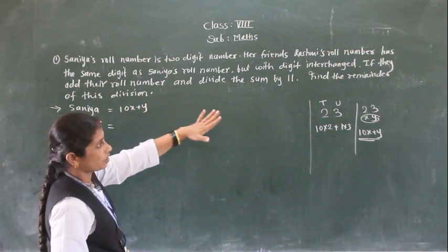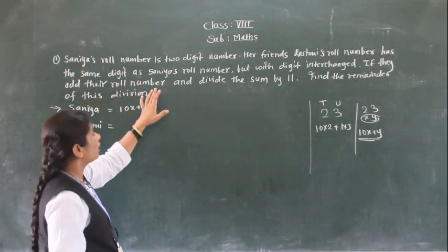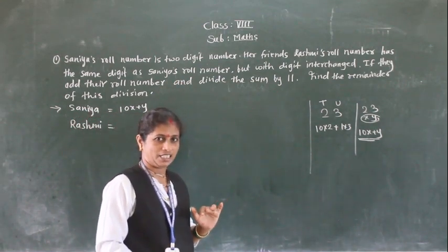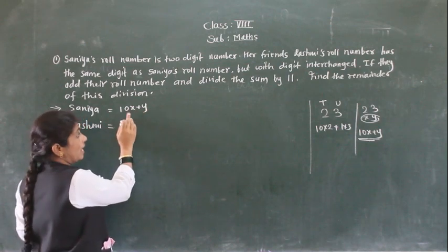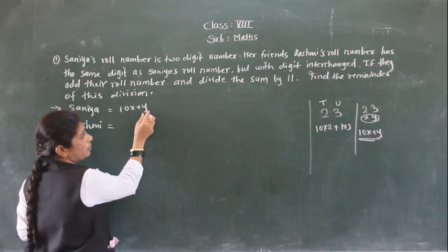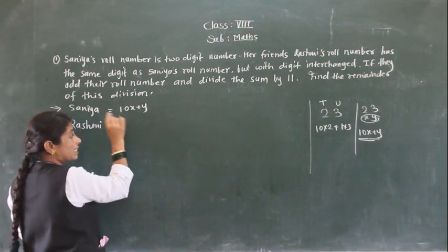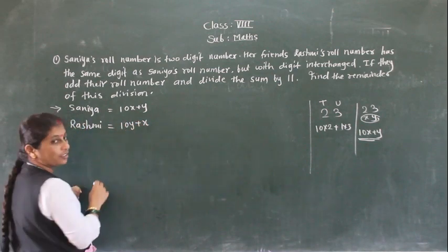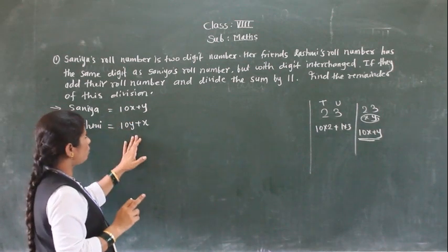And our friend Rashi's roll number has the same digits, but the digits are interchanged. So here the tens digit becomes the units digit and vice versa. The tens place value is 10 and units place value is 1. So when the digits are interchanged, Rashi's roll number becomes 10y plus x.